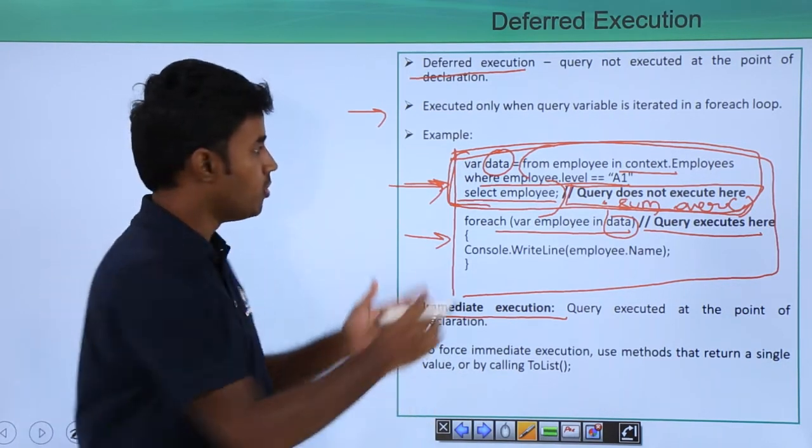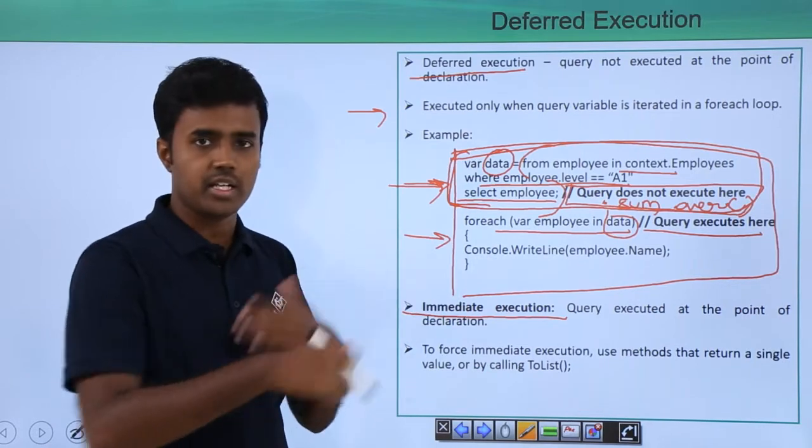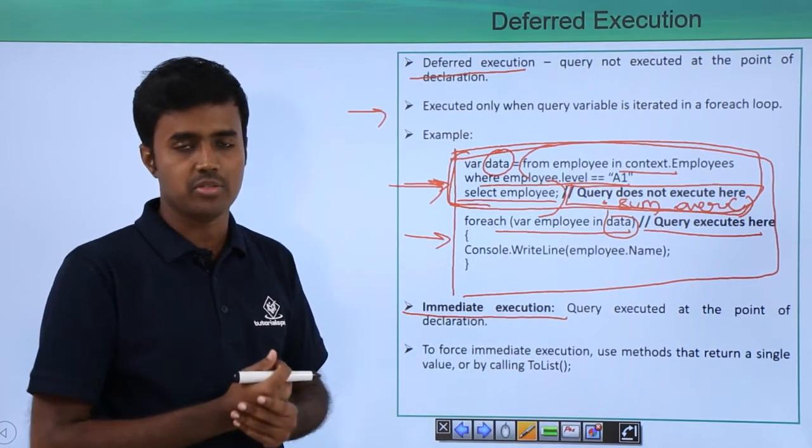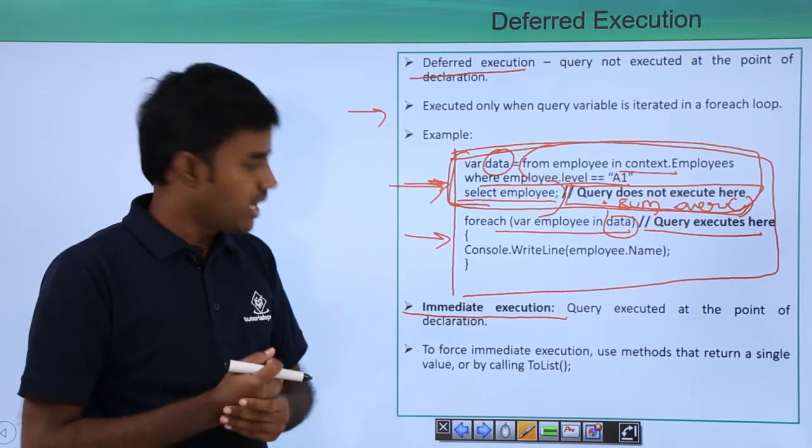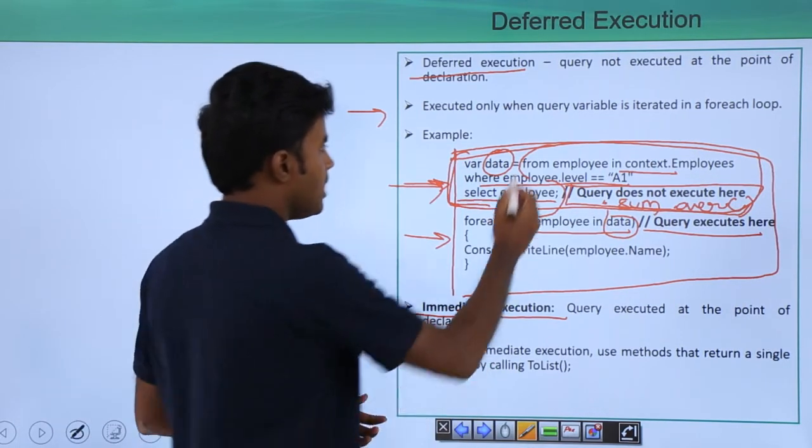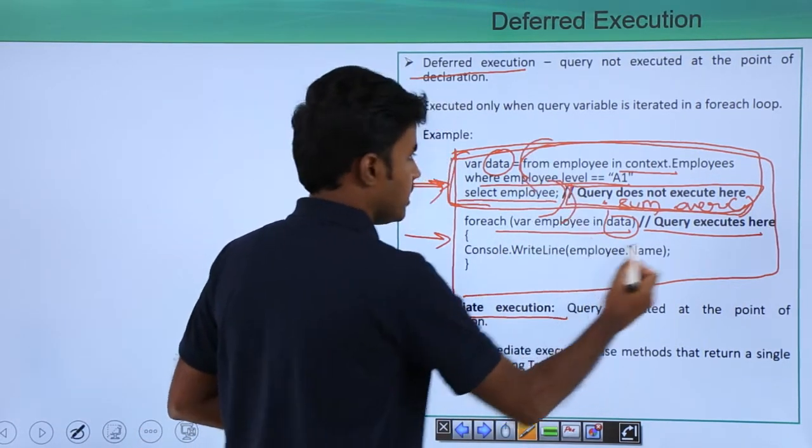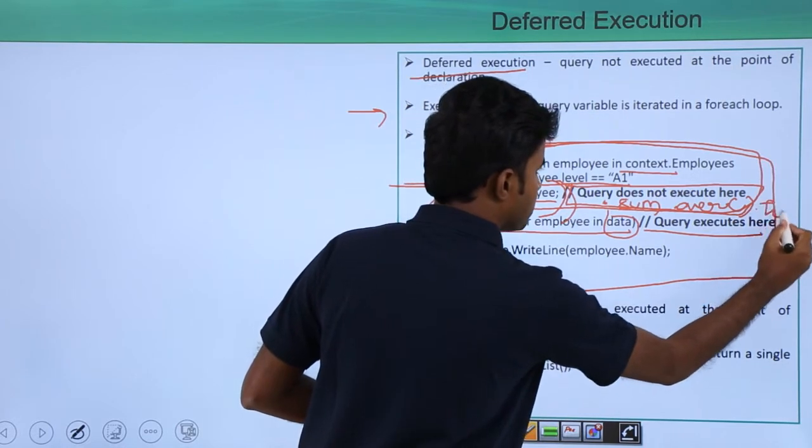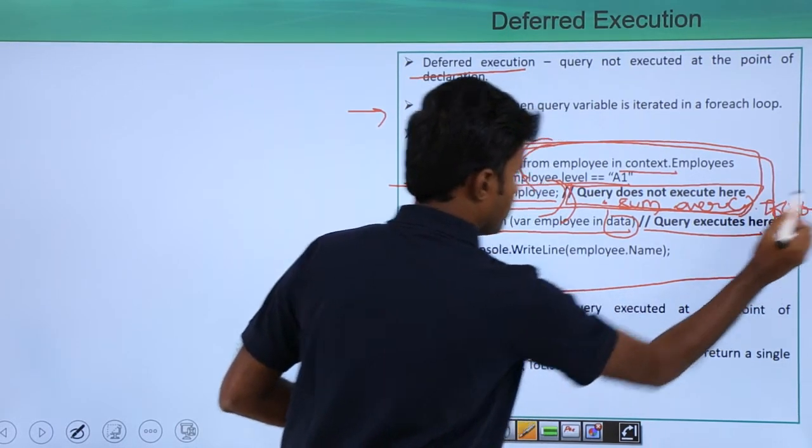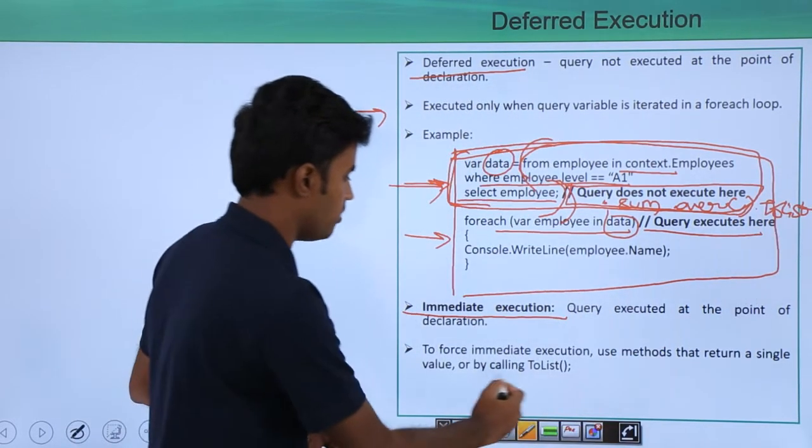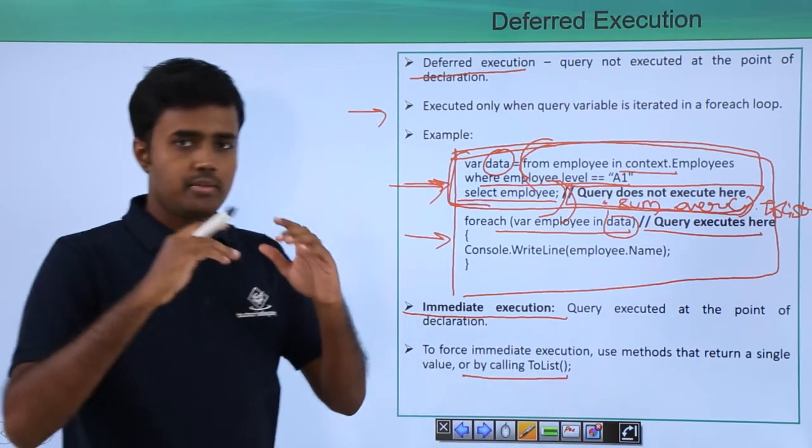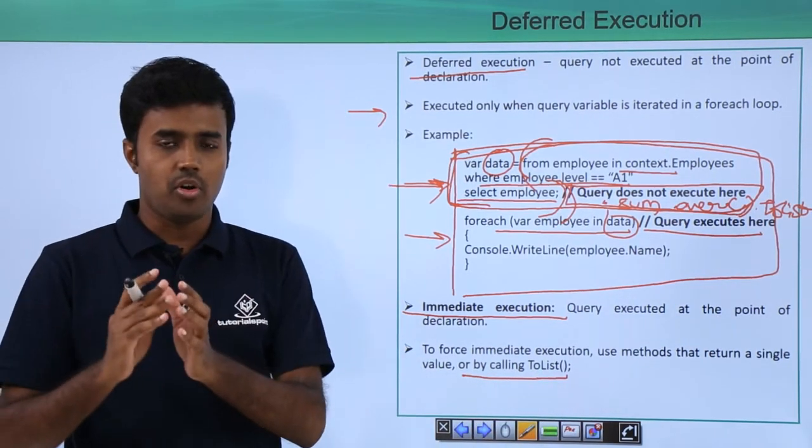If you do not have something that returns a single value, what you can do is put the entire thing into dot ToList. That is what I have mentioned over here. You can put the entire query and call ToList function.